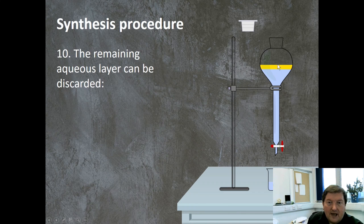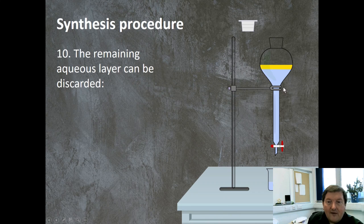The remaining aqueous layer, the yellow layer here, will be left in the flask. And we don't want this anymore. It's just unwanted side products, the aqueous layer. So then we'll just be left with the aqueous layer in the flask, which we don't need. We can discard that down the fume cupboard sink.